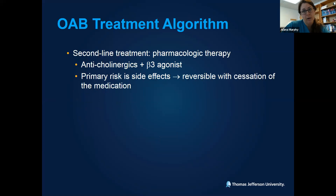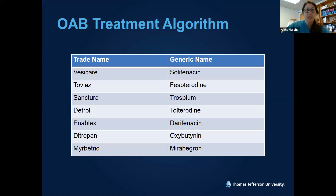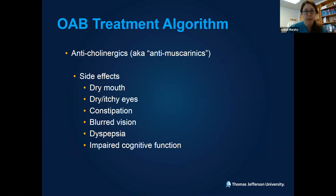Second-line therapies are oral medications — pharmacologic therapy. We have two main categories: anticholinergics and beta-3 agonists. The primary risk here is side effects and medication interactions, but these are generally reversible with cessation of the medication. We have seven options available: six are in the anticholinergic or anti-muscarinic category. Side effects include dry mouth, dry eyes, constipation, blurry vision, dyspepsia, and impaired cognitive function — which we're learning more about even with short-term use. Contraindications include uncontrolled narrow-angle glaucoma, gastroparesis, and baseline cognitive impairment. Anticholinergics are not a great choice for elderly patients with polypharmacy who are already at risk for cognitive impairment.